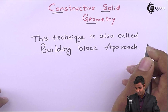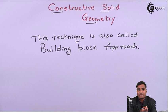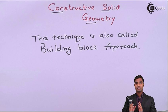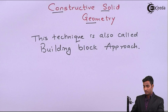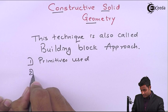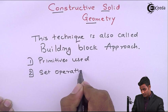This technique includes three steps: first is primitives, second is set operations, and third is tree structure. It basically allows the modeller to develop complex objects or complex shapes with the help of Boolean operators using simple objects or simple shapes.